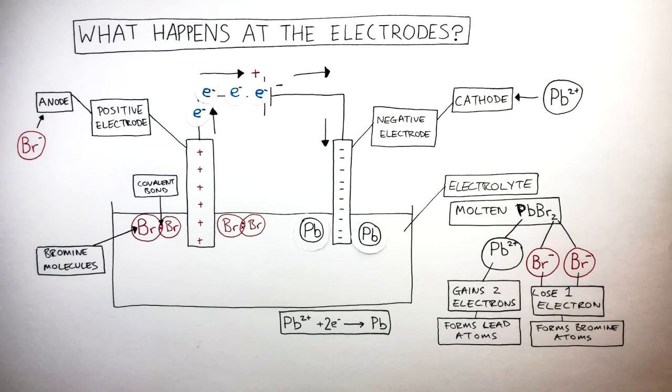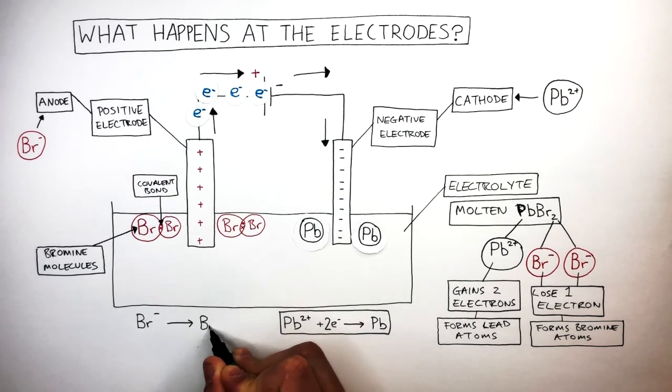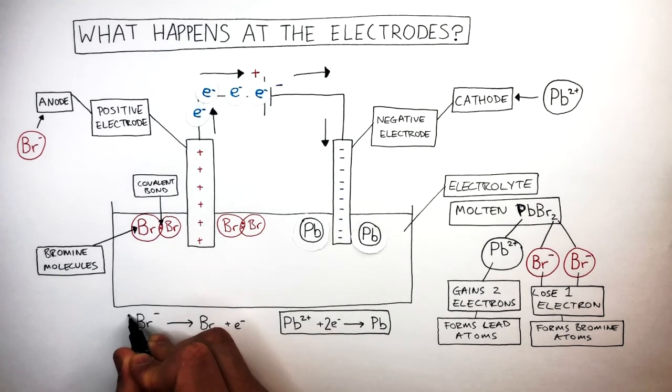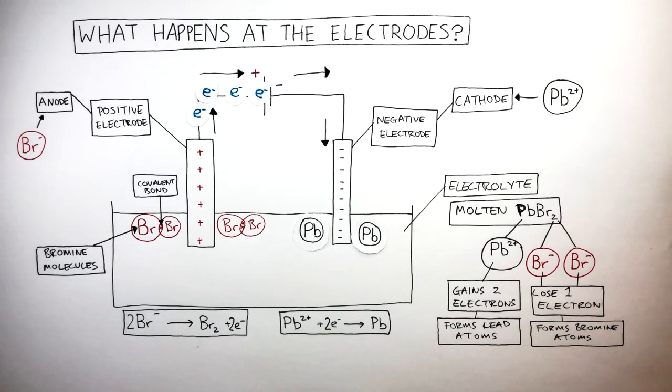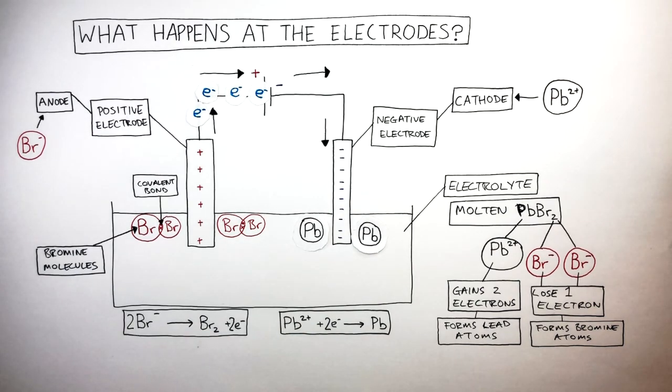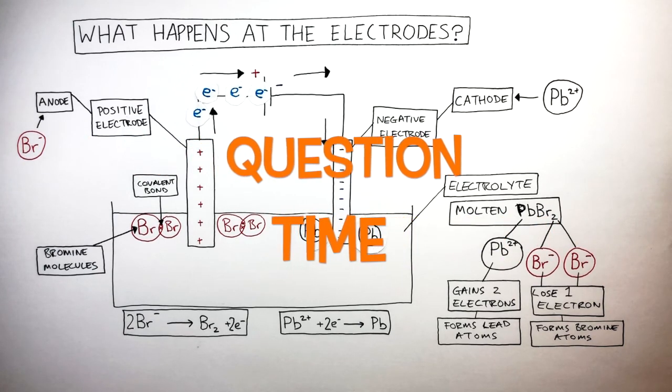To explain what's happened at the electrode we use a half equation. The bromide anion has formed a bromine molecule and has lost an electron. To balance this we write a 2 in front of the bromide anion so there are two bromine atoms on each side, and we write a 2 in front of the electron to show how two electrons have been lost by two bromide anions. It's question time. Attempt these questions to check your understanding.